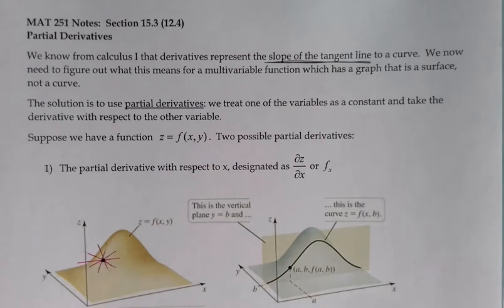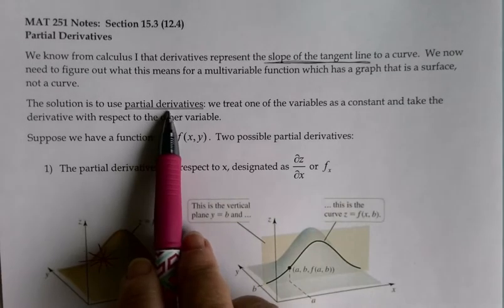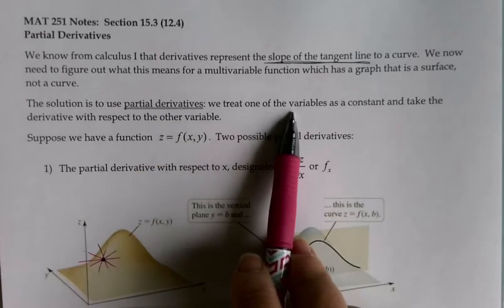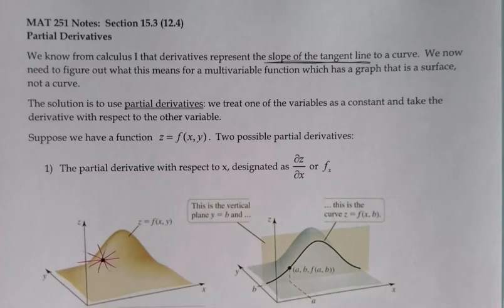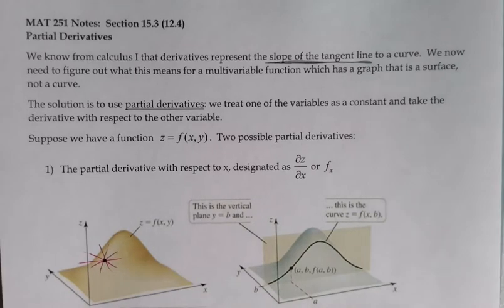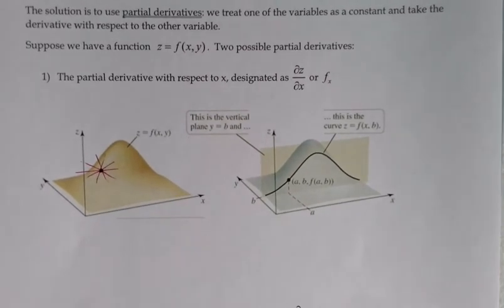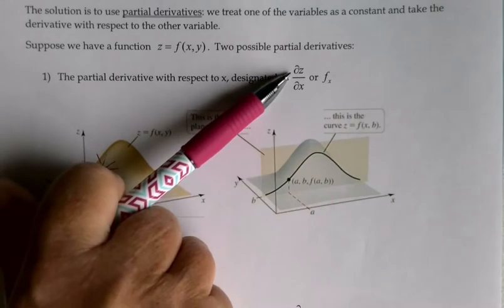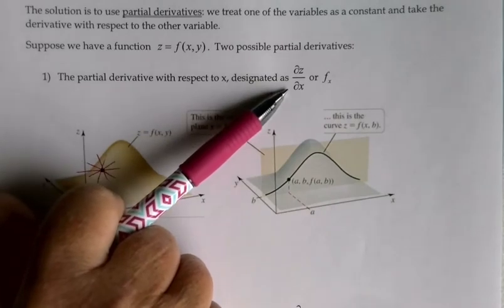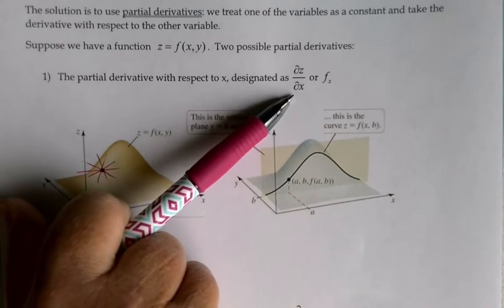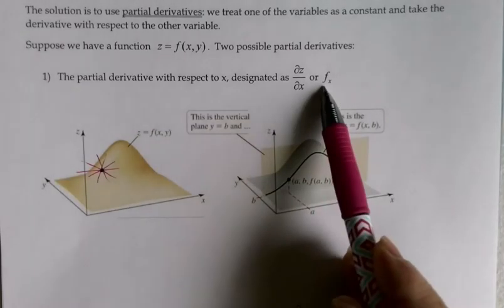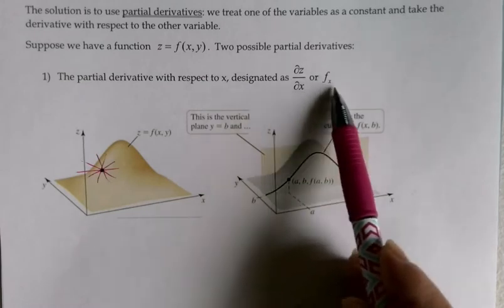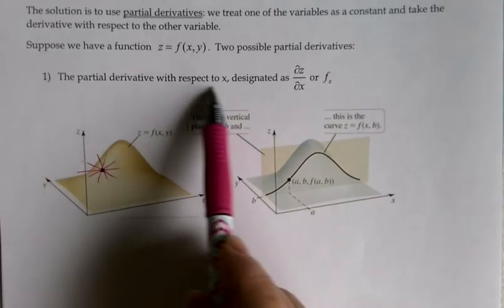The solution to this problem is to use what are called partial derivatives. To find a partial derivative, we're going to treat one of our variables as a constant, and then take the derivative with respect to the other variable. The notation uses little Greek letter deltas instead of the usual d to indicate partial derivative of z with respect to x, or with function notation, little f sub x. Both mean partial derivative with respect to x.